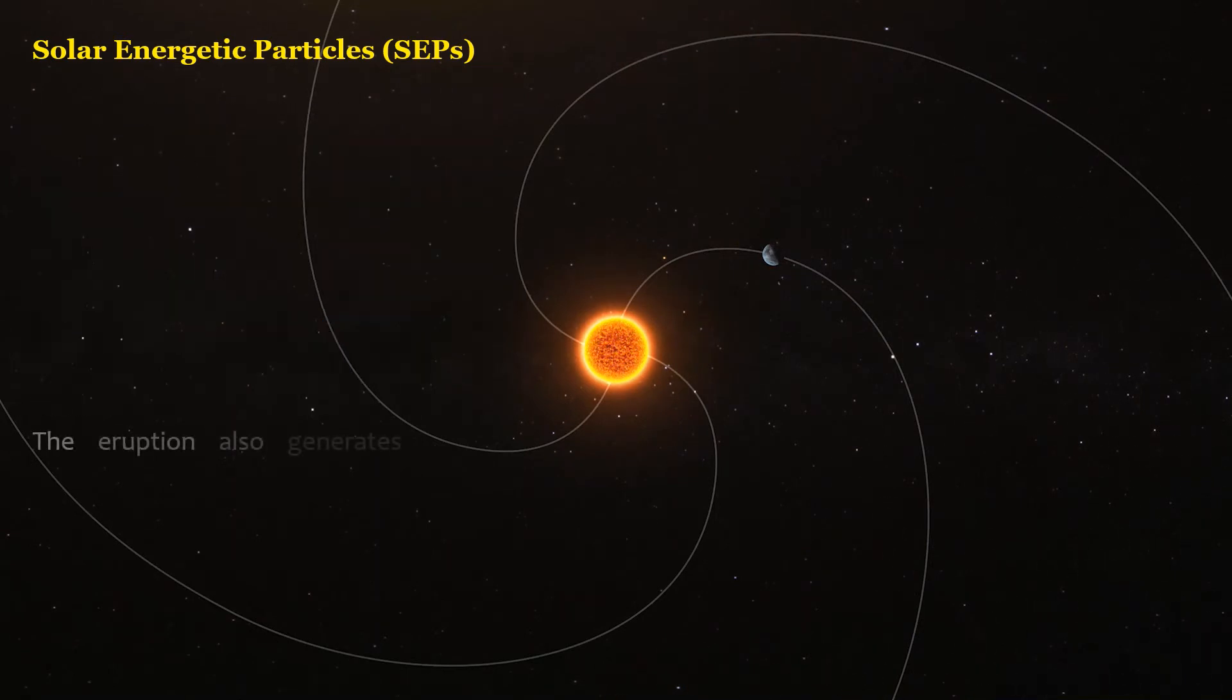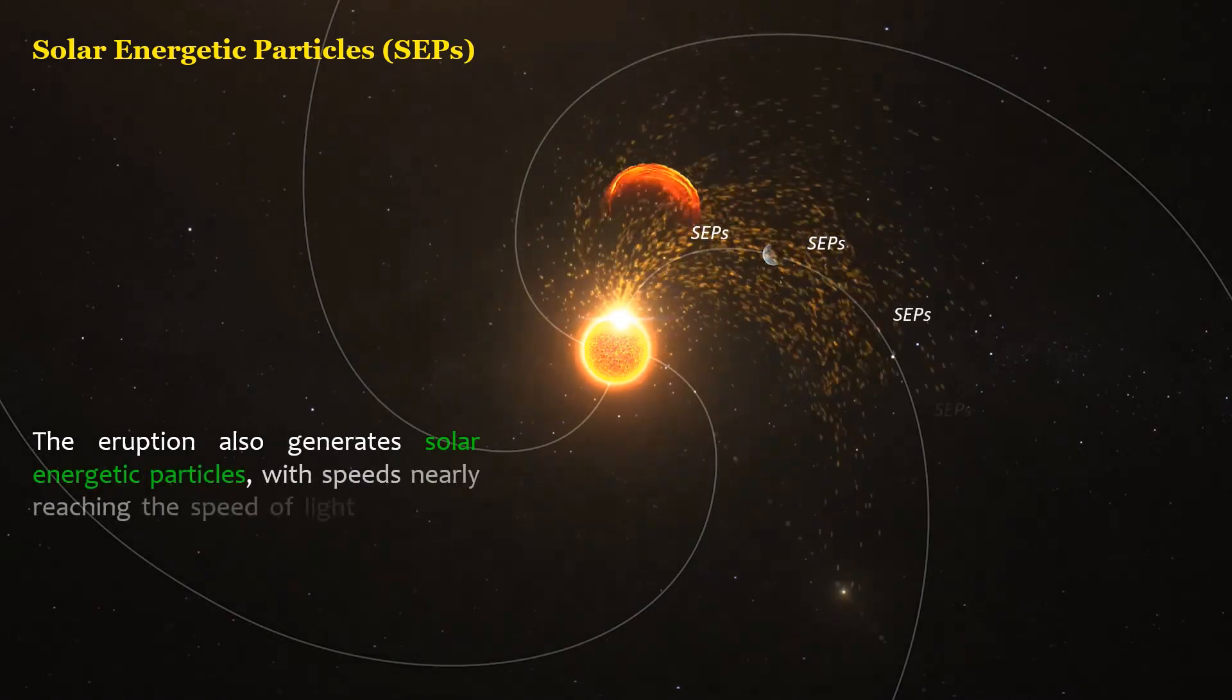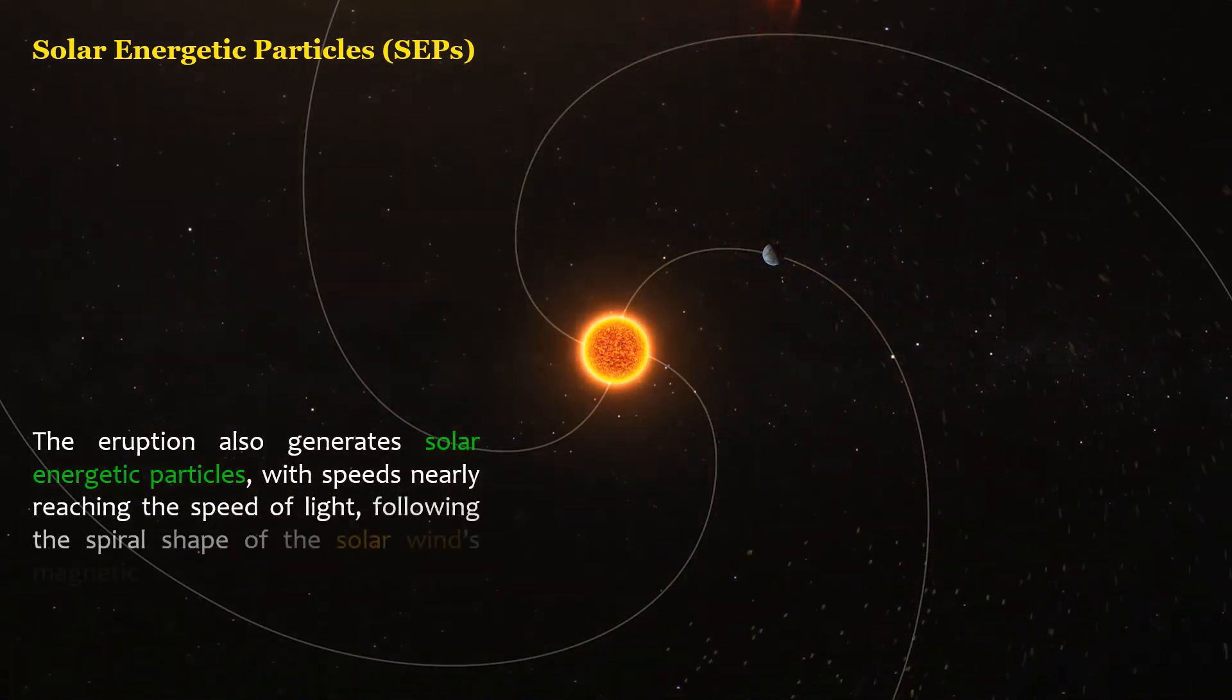The eruption also generates solar energetic particles, with speeds nearly reaching the speed of light, following the spiral shape of the solar wind's magnetic fields into interplanetary space.